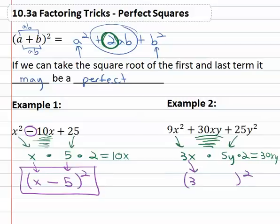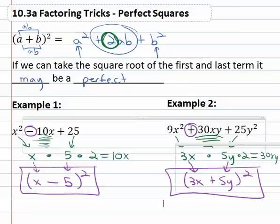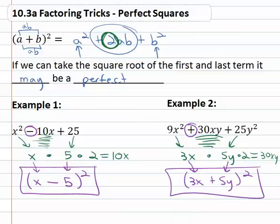Take the square root we just found, the sign from the middle, and the square root we just found. This is three x plus five y squared.